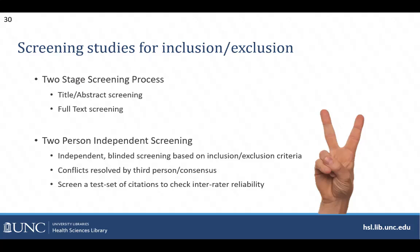Or you can have a review team meeting and come to consensus about each of those conflicts. It's a good idea as you're starting screening to do a test screen of a small set of citations and make sure that everyone's on the same page about how to apply your inclusion and exclusion criteria. And if you want, you can even do a more formal test of interrater reliability.